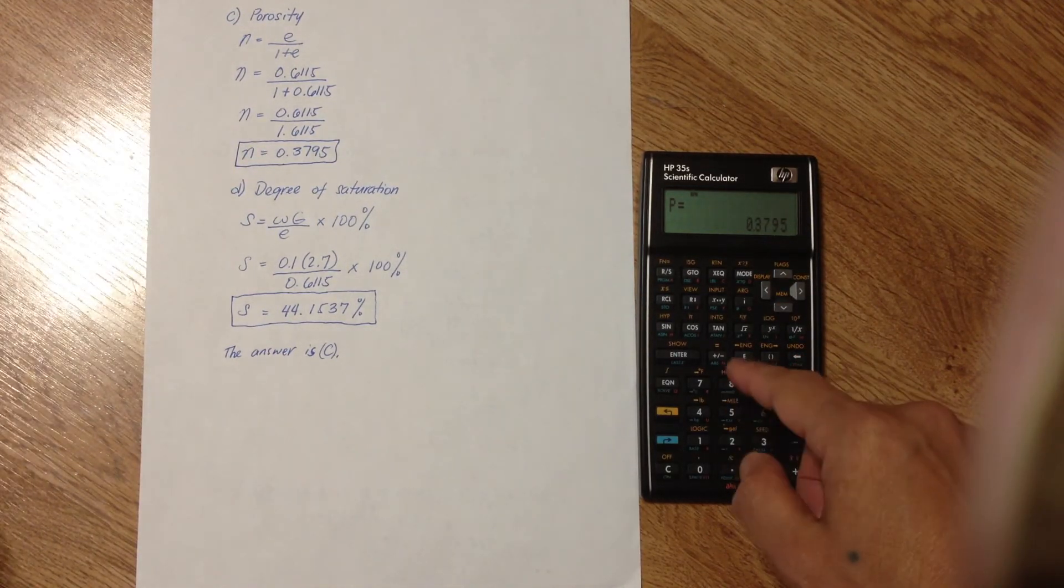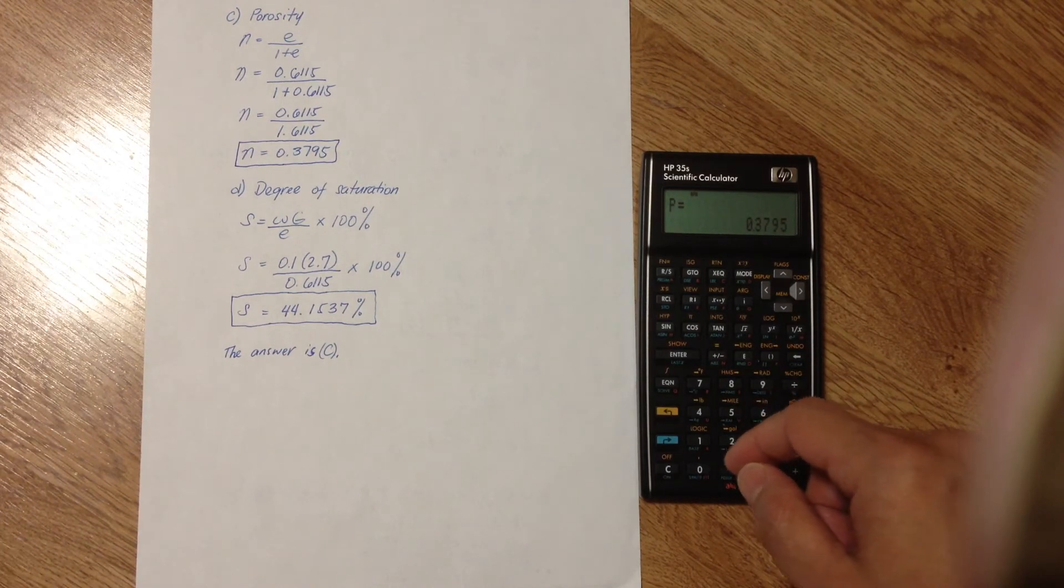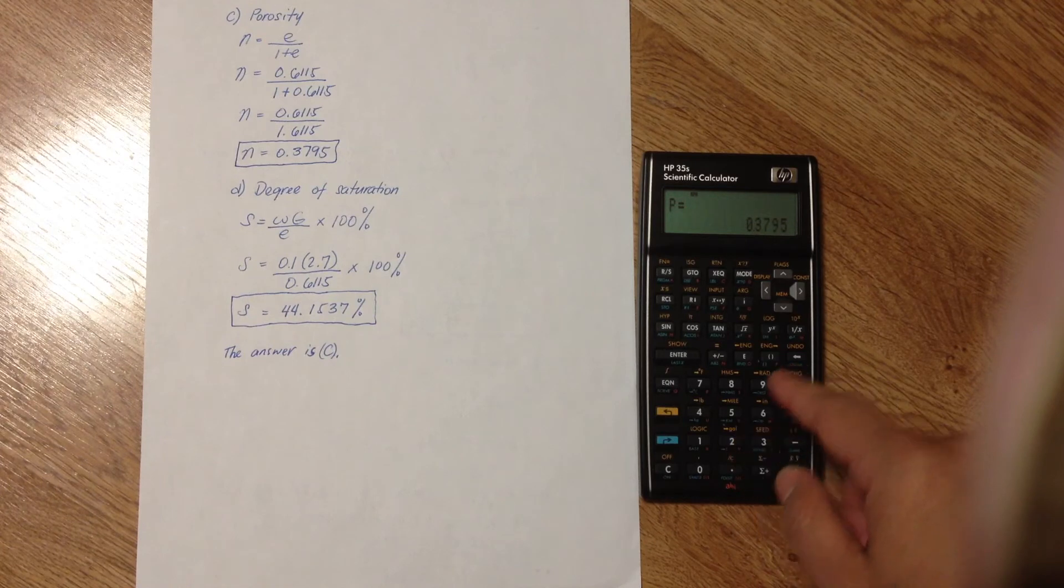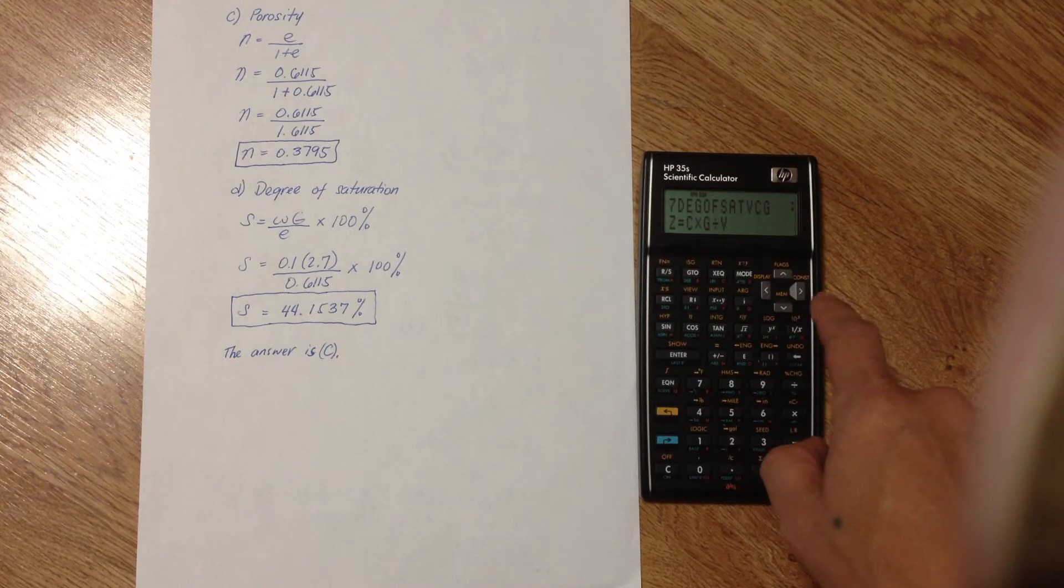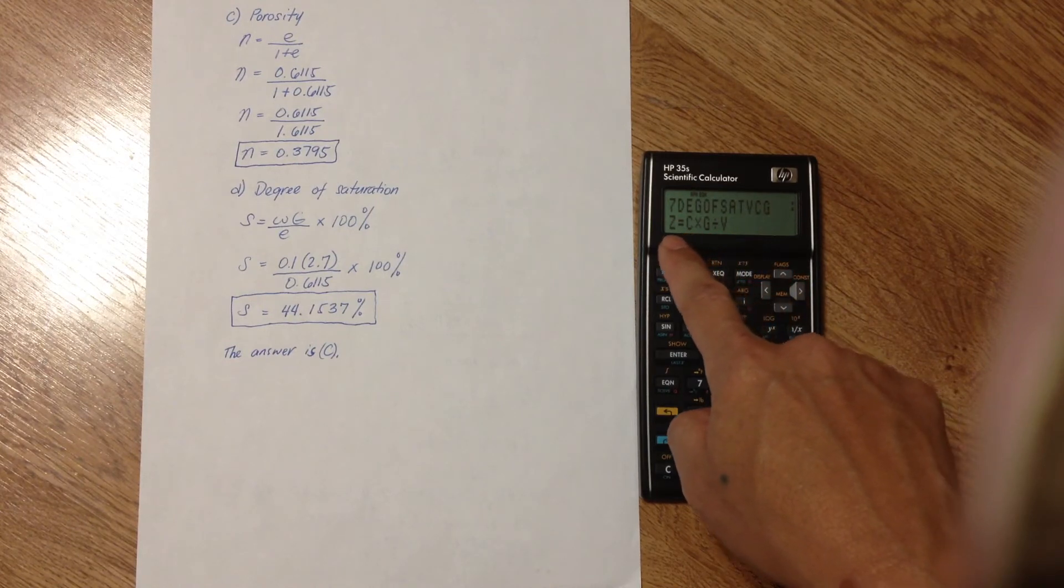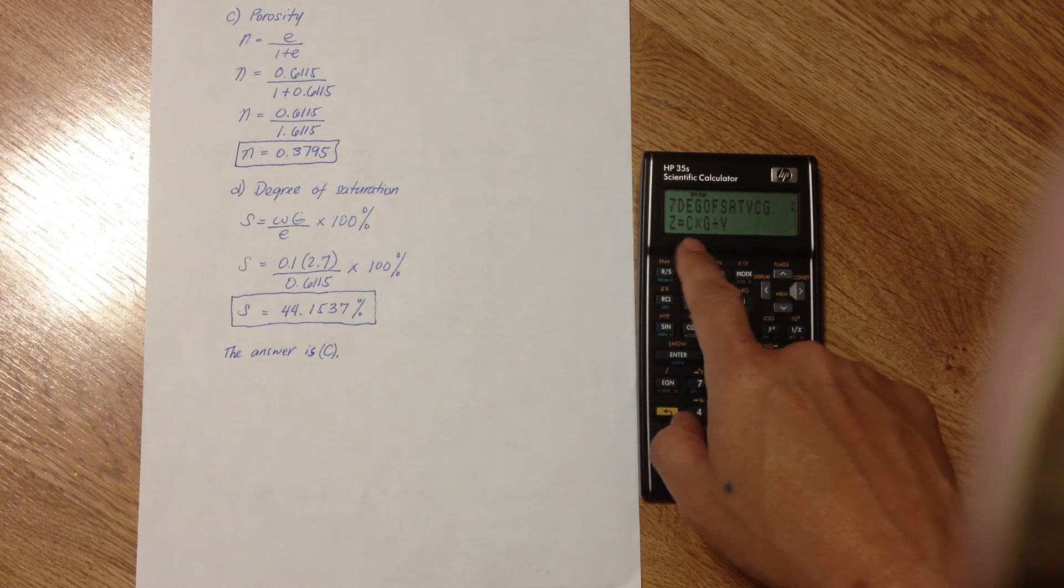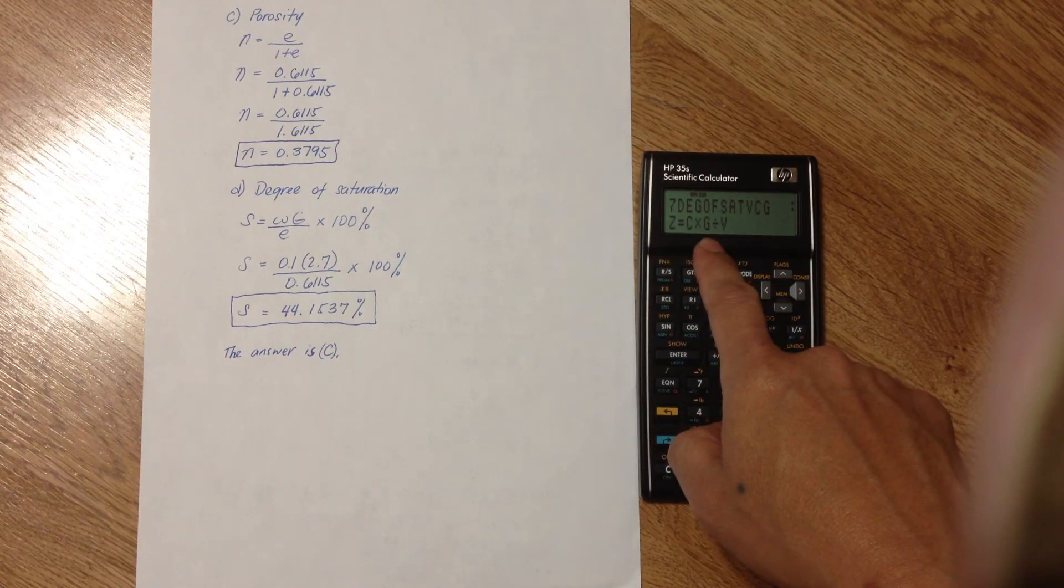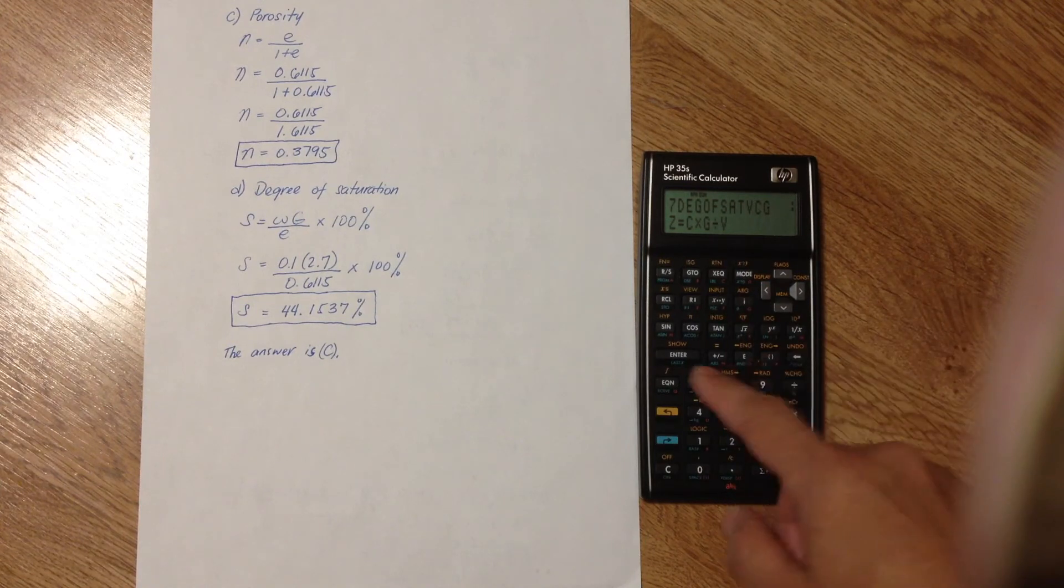And finally, the degree of saturation. Use equation number 7. Equation, and go to 7. Z is the degree of saturation. C is moisture content. G is specific gravity. And V is void ratio.